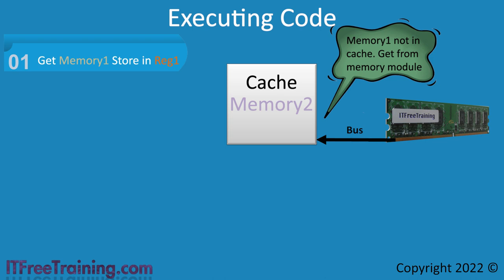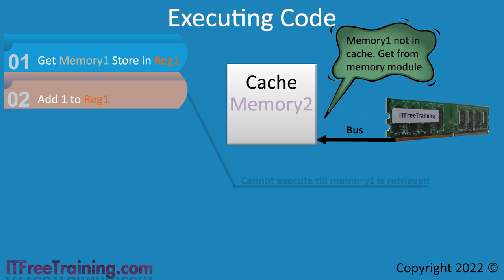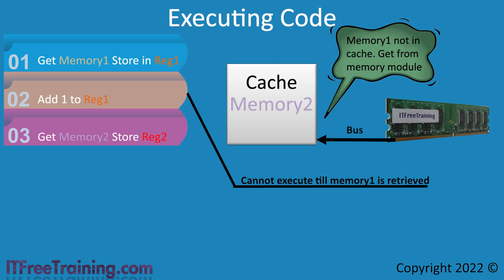To help get around this, modern CPUs can execute instructions out of order. While the CPU is waiting for the memory to be retrieved, the CPU will look at the next instruction — in this case, to add 1 to register1. That instruction cannot be executed until the CPU has obtained the data from memory1. Rather than wait, the CPU can look at a number of instructions in advance. The CPU looks at the third instruction: get data from memory2 and place it in register2. Since memory2 is already in the cache, this instruction executes immediately. The next instruction adds 2 to register2 — this also executes immediately.